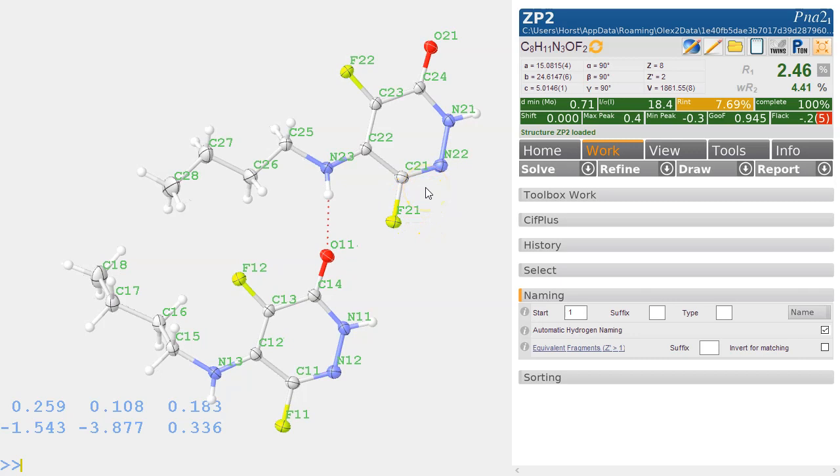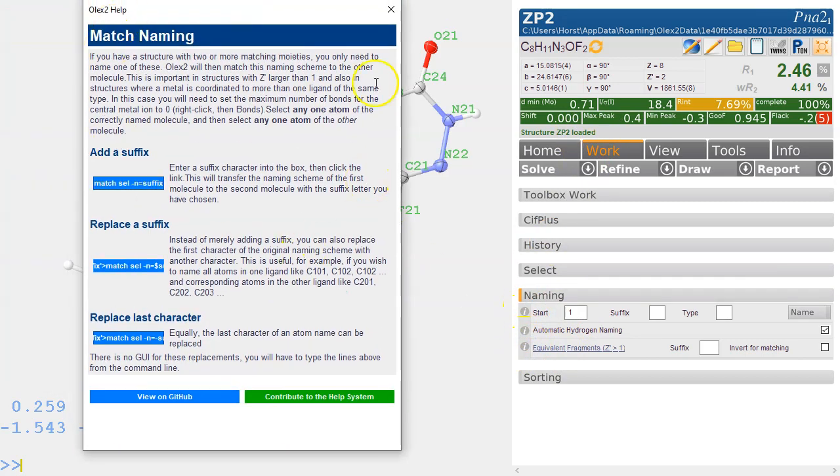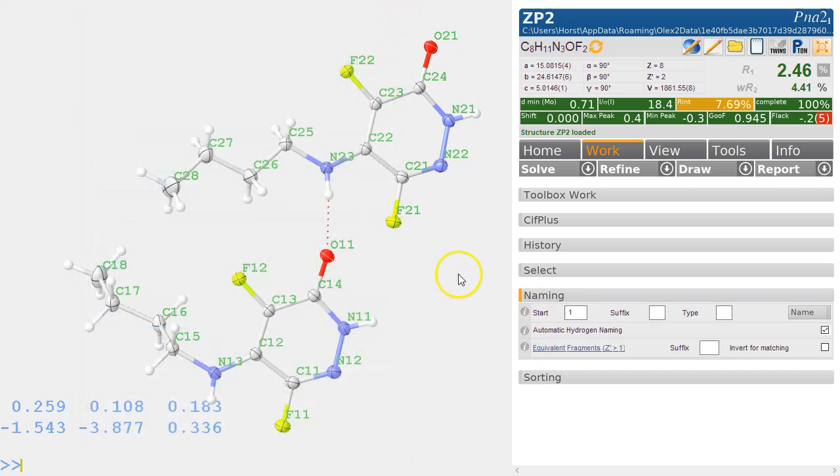It is quite flexible, a little bit confusing sometimes, but there is a bit of help. If you click on this info symbol in work naming, there is actually a fair bit of help, so if you're lost you can have a look over there.